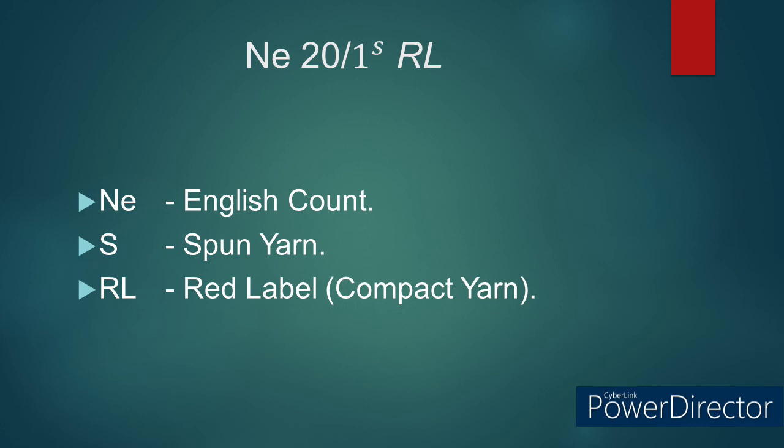Number 9: NE 20/1S RL. Here NE refers to English count. S refers to spun yarn. RL refers to red label, meaning compact yarn — that is, the yarn is manufactured using compact ring spinning technique.